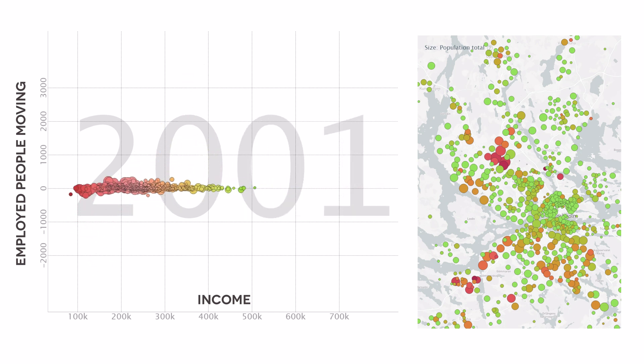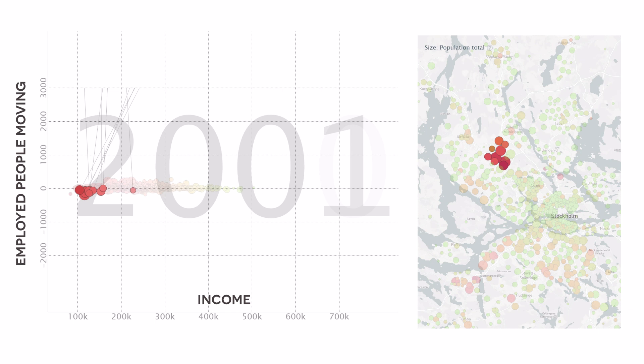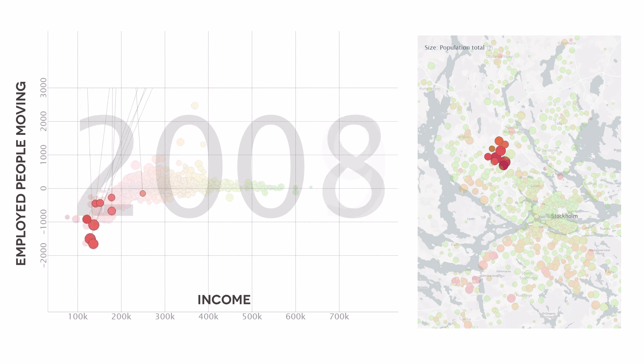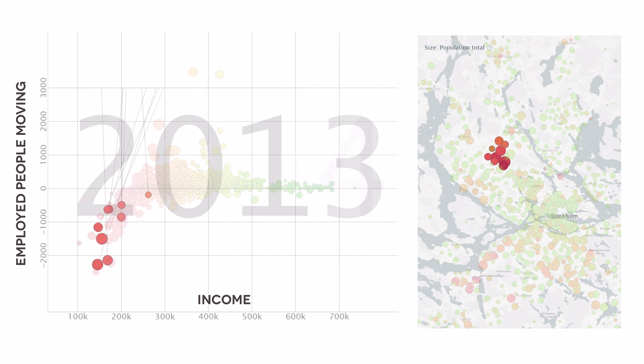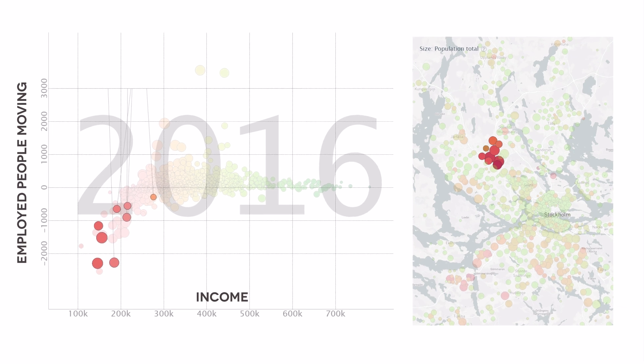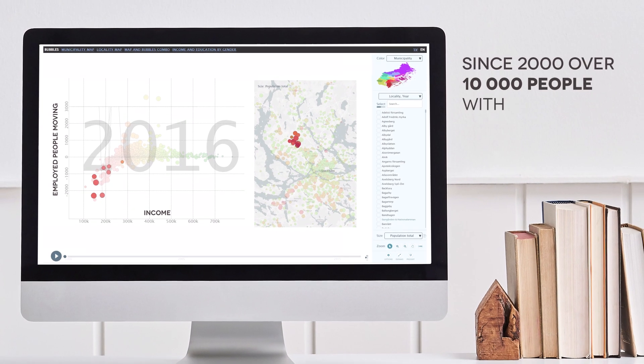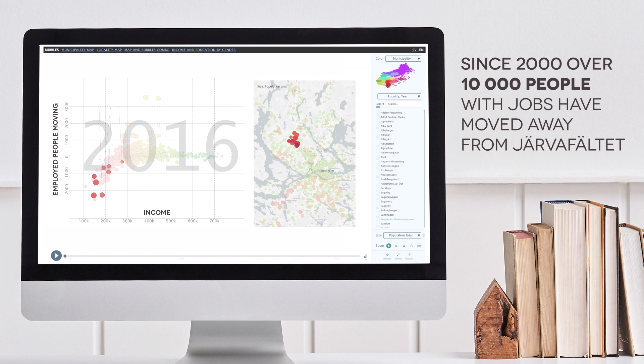What has happened? We can see that these neighborhoods are losing working people every year. People settle here but once they have a job they move. Since 2000, over 10,000 people with jobs have moved away from Järvafältet. And this is a huge number when around 50,000 people live here. With that in mind it's not so strange that the average income is not raised when every year this area is being drained of people who work. Work drain.